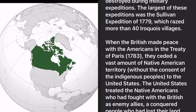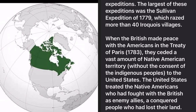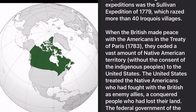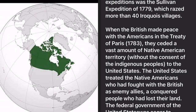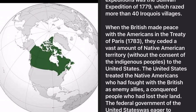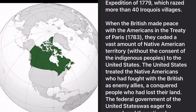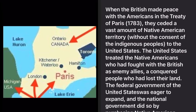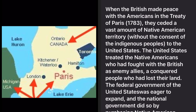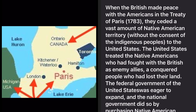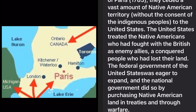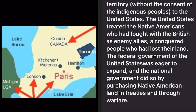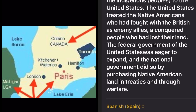When the British made peace with the Americans in the Treaty of Paris in 1783, they ceded a vast amount of Native American territory, without the consent of the indigenous peoples, to the United States. The United States treated the Native Americans who had fought with the British as enemy allies — a conquered people who had lost their land. The federal government of the United States was eager to expand, and did so by purchasing Native American land in treaties and through warfare.